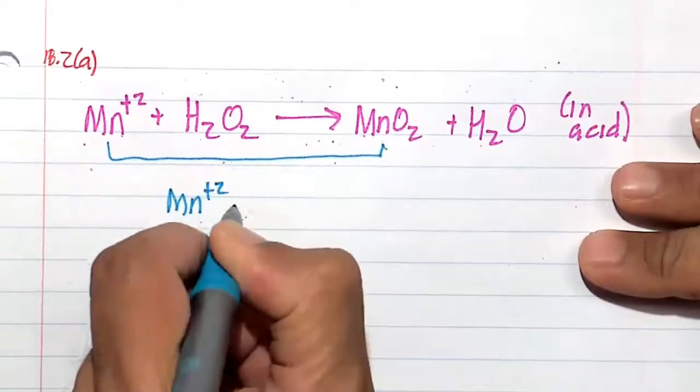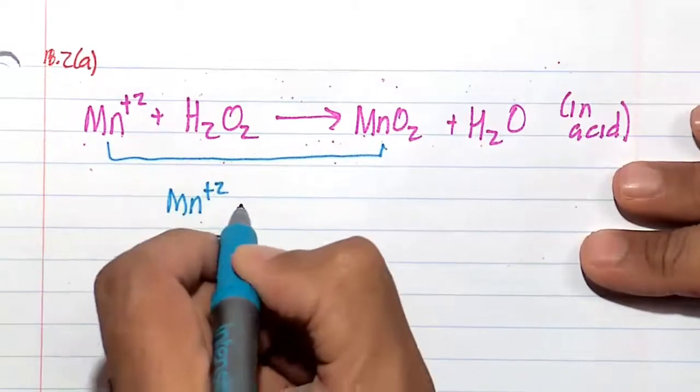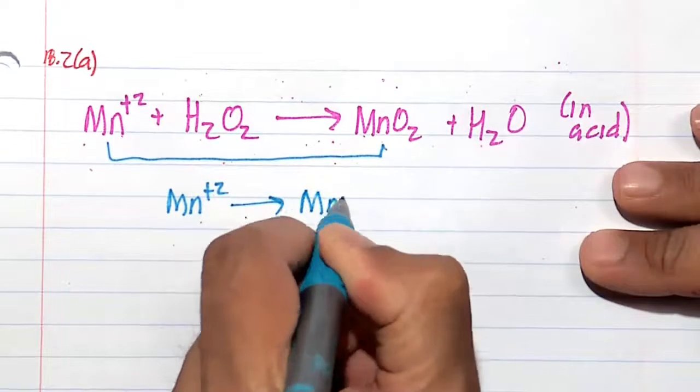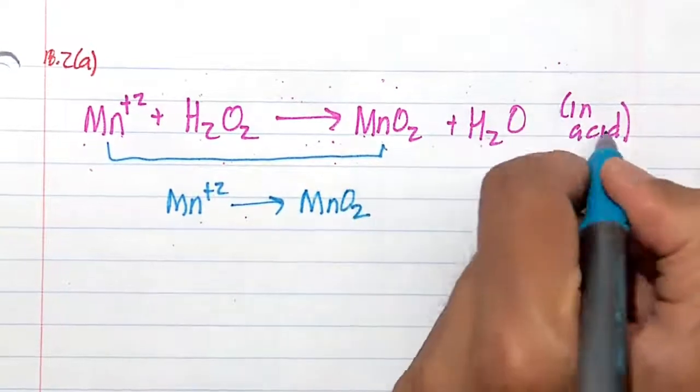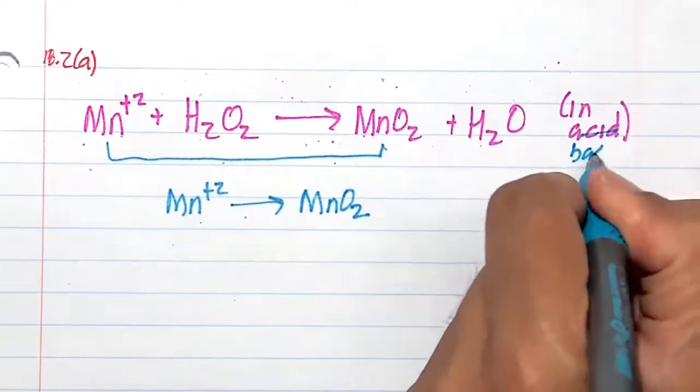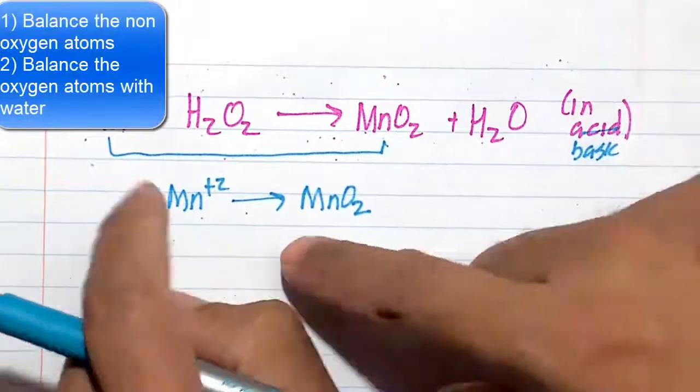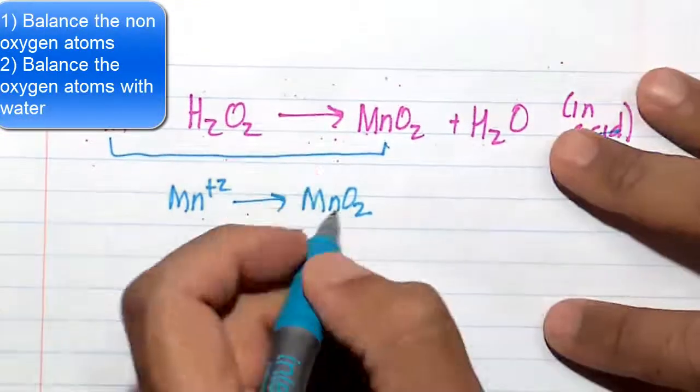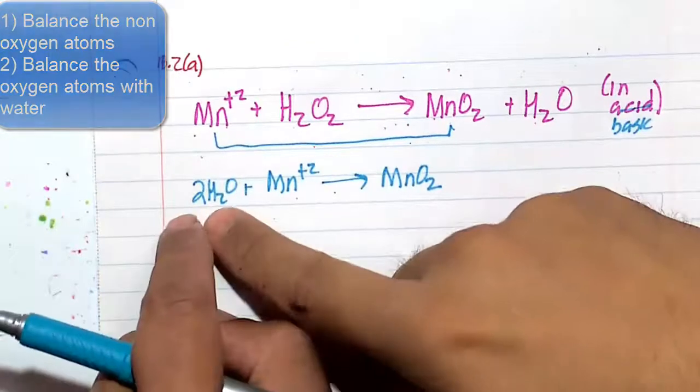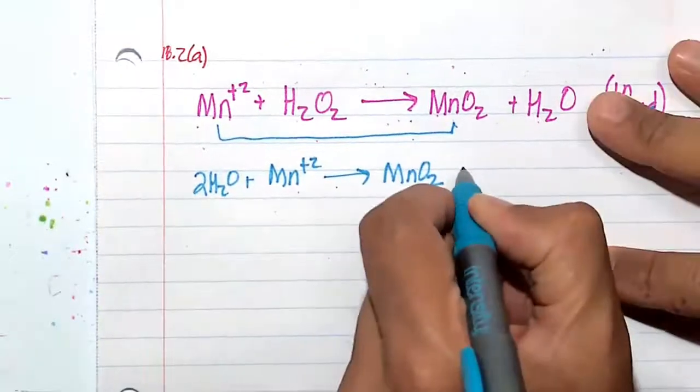So we have Mn+2 going to MnO2, and this is actually in basic solution, looking back at this problem here. We balance the Mn's already. I'm going to balance the oxygens with water, and then I'm going to balance the hydrogens with H+.